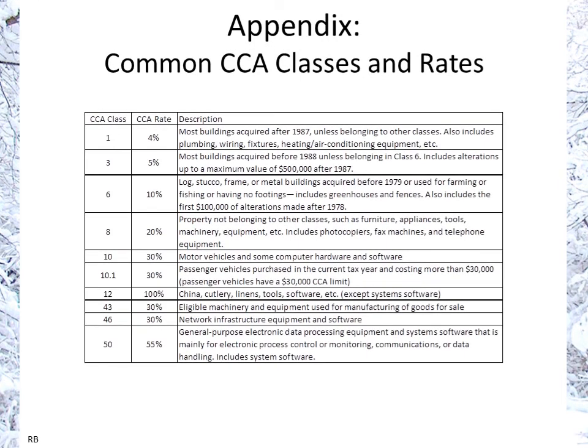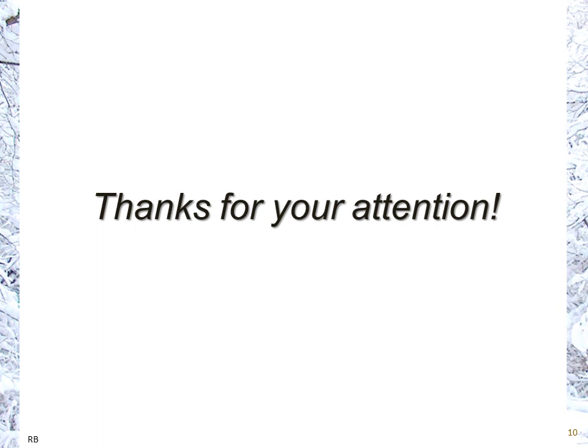Here is an overview of the various CCA classes and their rates. These would rarely change — only occasionally would the rates be updated. You can see the different classes and their corresponding rates. That concludes this overview of capital cost allowance for Canadian tax purposes, including the undepreciated capital cost and depreciation for tax purposes. Thank you for your attention.